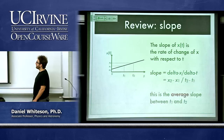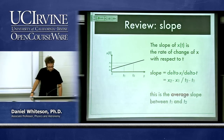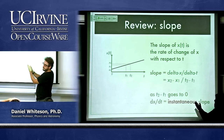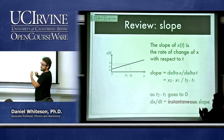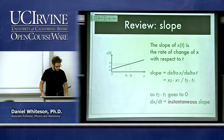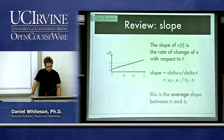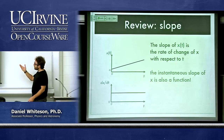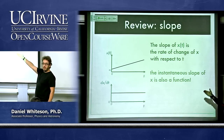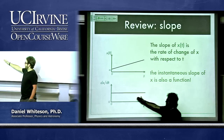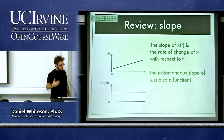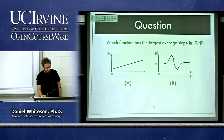The instantaneous slope is the derivative of the function, written dx/dt. For a linear x(t), the slope — and therefore velocity — is constant. Our three key quantities this quarter are position, velocity, and acceleration: velocity is the slope of position, and acceleration is the slope of velocity. You can keep taking derivatives — the derivative of acceleration is called 'jerk' — but we'll mostly deal with constant acceleration or no acceleration.